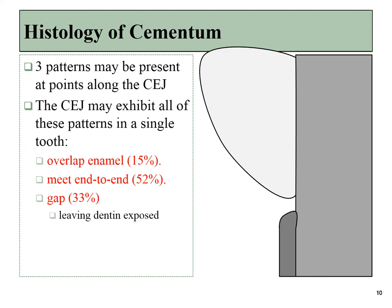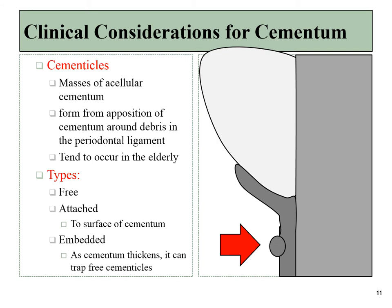Cementum can come all the way up to enamel, but sometimes it doesn't quite get there, leaving behind a little region of exposed dentin. Usually it meets end-to-end with the enamel, and a small percentage of the time it will actually overlap the enamel. Sometimes the surface of cementum is not smooth and uniform, and small masses called cementicles may form — these are usually acellular cementum with no cementocytes. This happens more frequently in the elderly, and the cementicles may be attached to, completely free of, or embedded within the cementum.